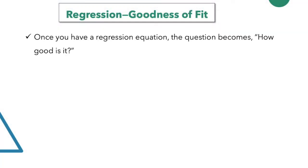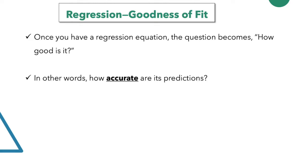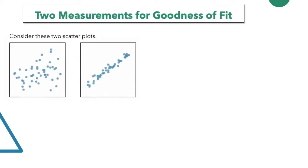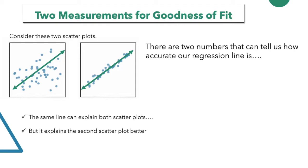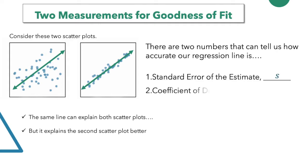Once you have a regression equation, the question becomes: how good is it? In other words, how accurate are its predictions? Consider these two scatter plots. The same line can explain both scatter plots, but it explains the second one better. There are two numbers that can tell us how accurate our regression line is. Number one is the standard error of the estimate — we call that s. And number two is the coefficient of determination — we call that r squared.